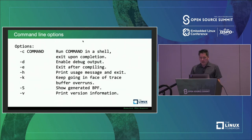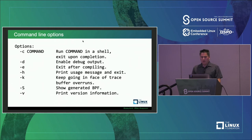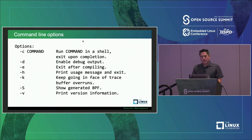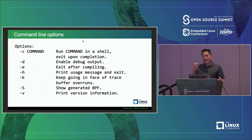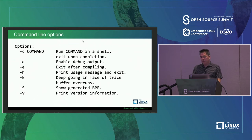Here are Ply's command-line options. The most interesting is dash capital S, which shows you the BPF bytecode instructions. The other useful option is dash C, which runs a command in the shell, and when that command exits, it automatically kills the Ply trace session for you.